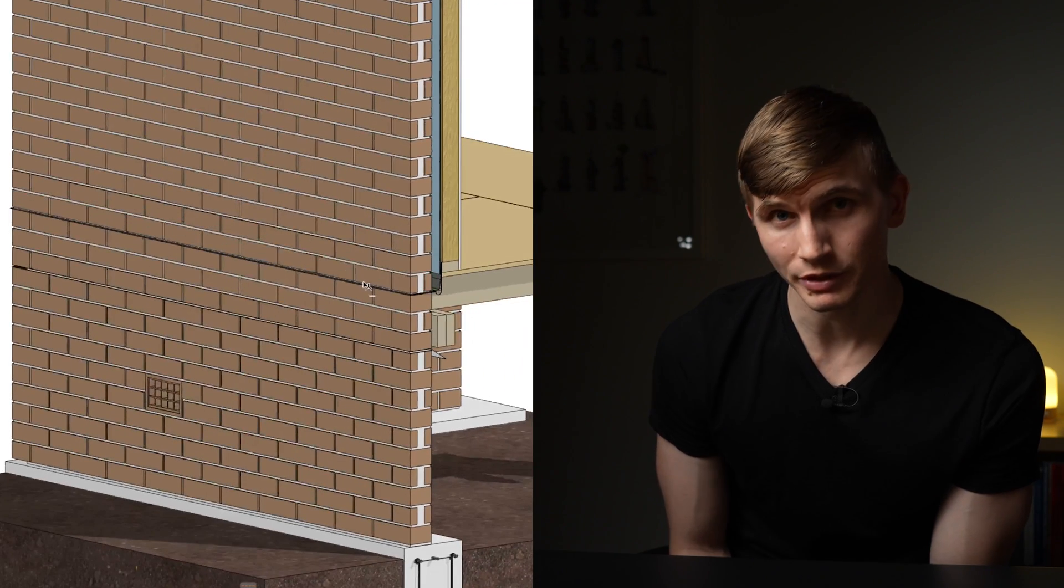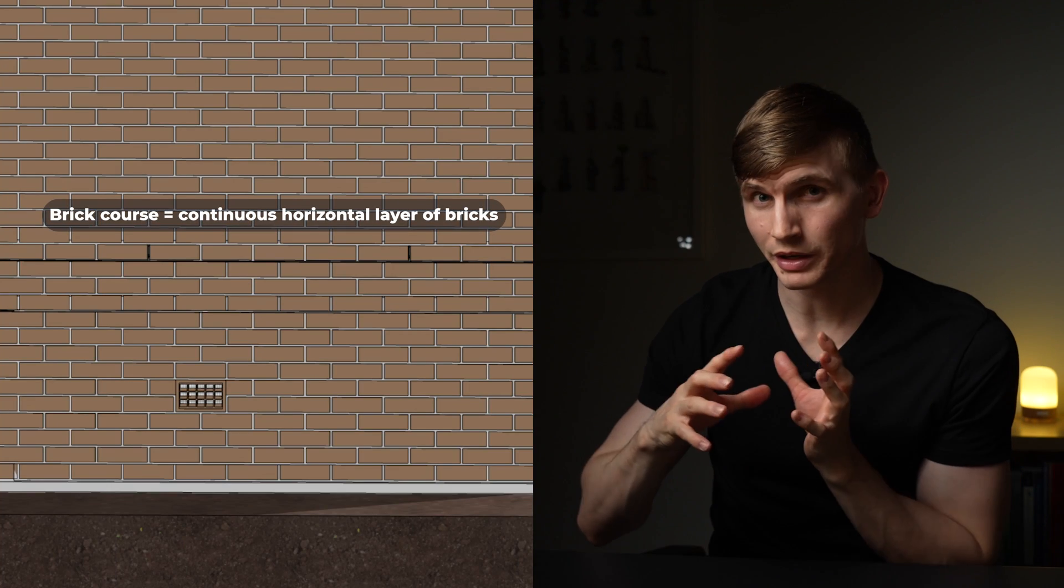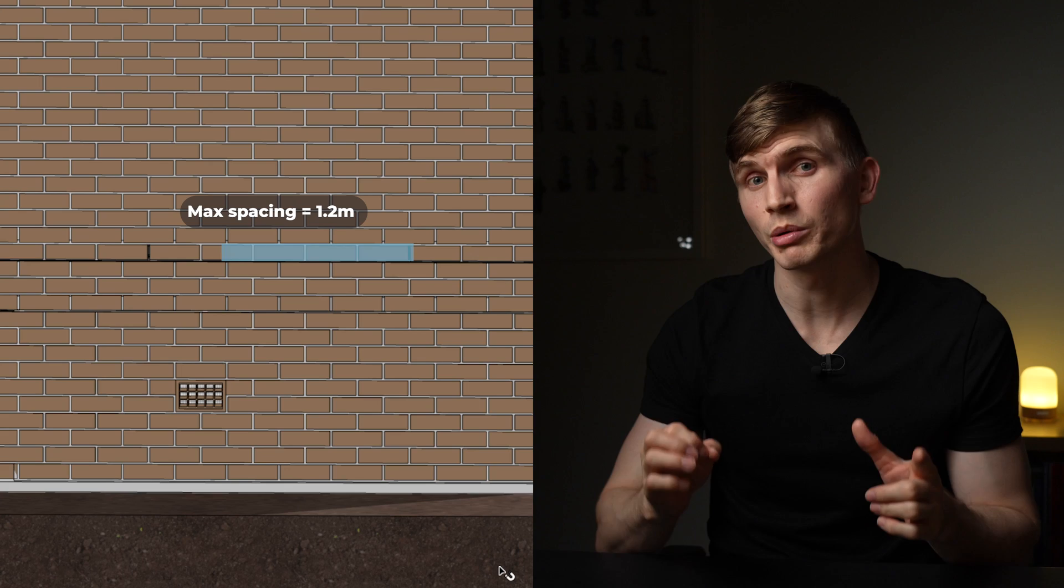The water that hits the non-permeable DPC is then channeled through the weep holes. The weep holes are just a perp and a perp is just a vertical joint between masonry like brick. Basically a gap between the brickwork like this. Weep holes need to be created in a brick course above any DPC and can't be spaced any further than 1.2 meters.